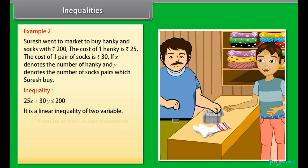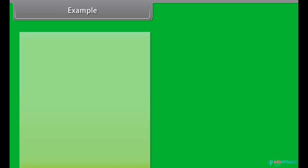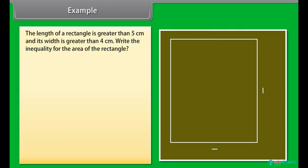It can be written in two statements: 25X plus 30Y is equal to 200, and 25X plus 30Y less than 200. Statement A is the inequality in this case.